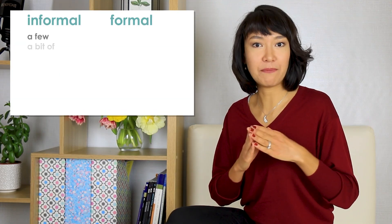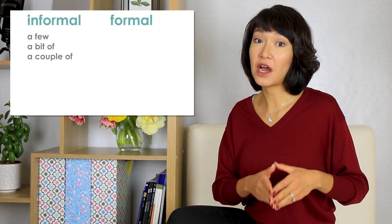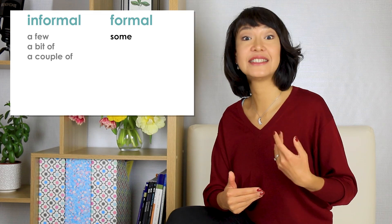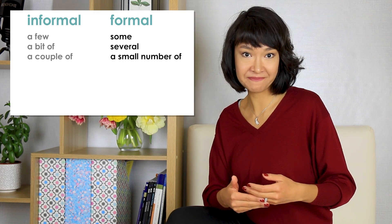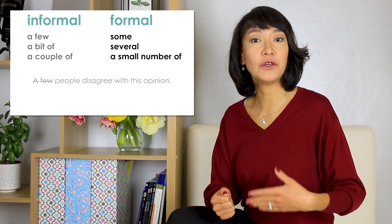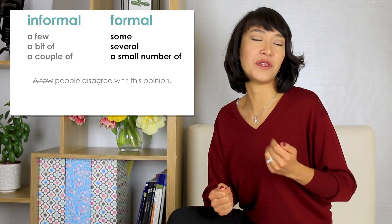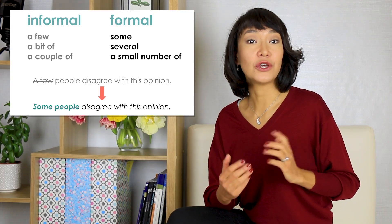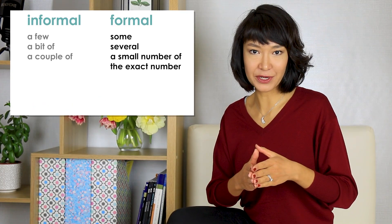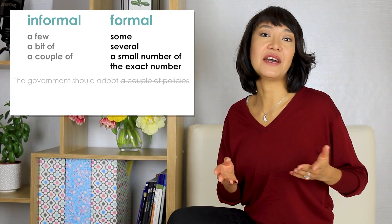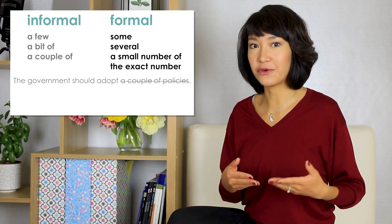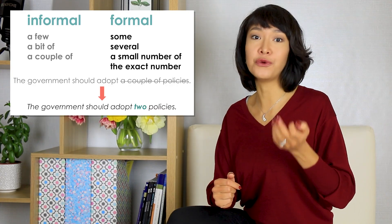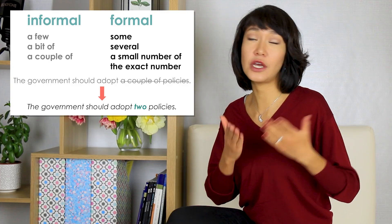Quantifiers a few, a bit of, a couple of are all informal too. Use some, several, or a small number. Instead of 'a few people disagree with this opinion,' say 'some people disagree.' You can also use the exact number. 'The government should adopt a couple of policies' becomes 'the government should adopt two policies.' It's short and to the point.